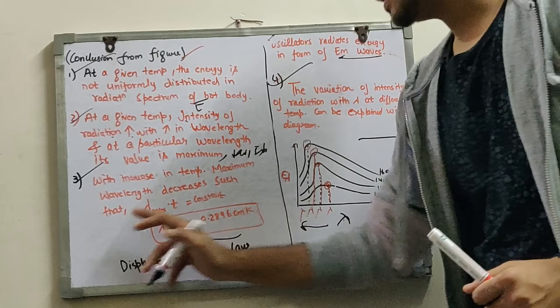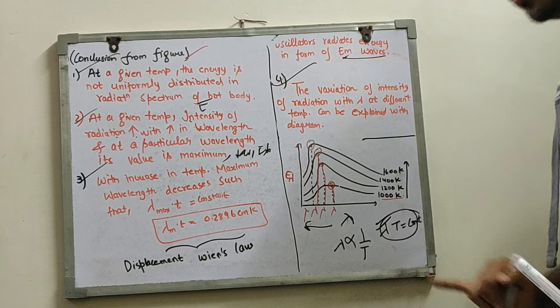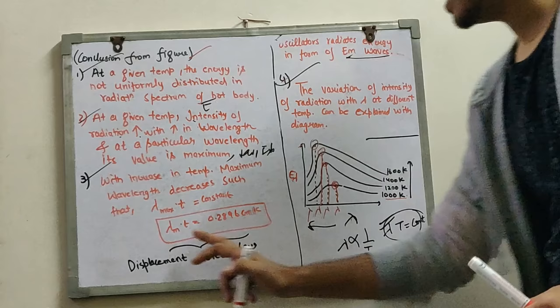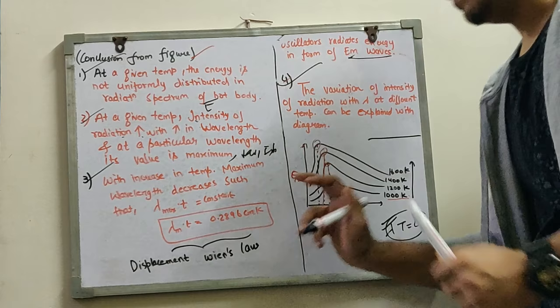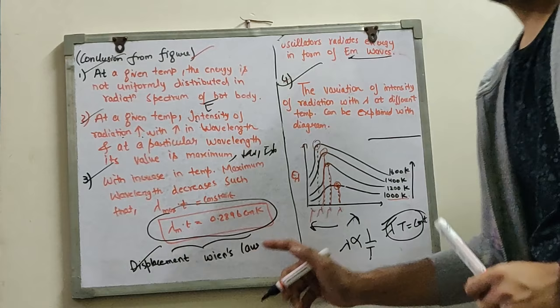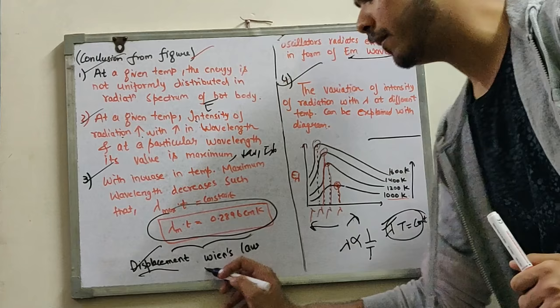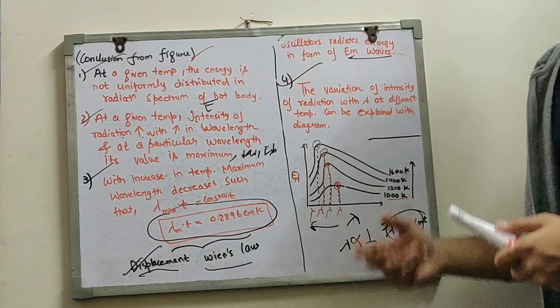Third conclusion: with increase in temperature, the maximum wavelength (lambda max) decreases, such that lambda is inversely proportional to T. That means lambda M multiplied by T is constant, equal to 0.2896 cm·Kelvin. This whole relation is known as Wien's Displacement Law. We will study Wien's Displacement Law in detail in the next video.